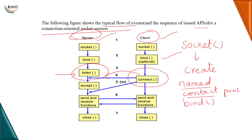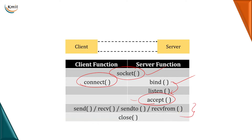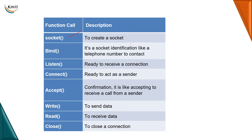Once the send and receive of messages is done, the connection can be closed. Let us see what the different API functions used at the client side and the server side are. Both the client and server make use of the socket function to create a socket. The bind function is used by the server to bind the IP address and the port number, making the socket a named contact point ready to listen. The client then calls connect, requesting a connection to the server. Once the server accepts, we can transmit and receive data using functions like send, sendto, receive, or recvfrom. Once communication is over, we close or disconnect.